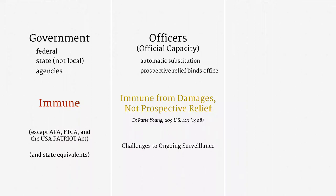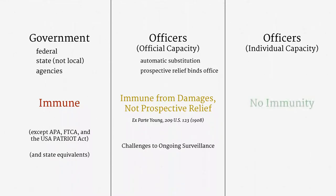The final category of defendant you should be aware of is a government officer sued in their individual capacity — in other words, sued as a private person. This seemingly minor formality has important impacts. Unlike an official capacity suit, there is no automatic substitution, and there is no binding relief on the office. However, there is a tremendous benefit for plaintiffs: there is no state sovereign immunity defense. A plaintiff can seek damages for past misconduct. For that reason, when challenging past instances of surveillance, individual capacity suits are a go-to tool.